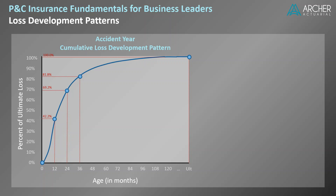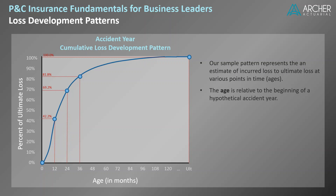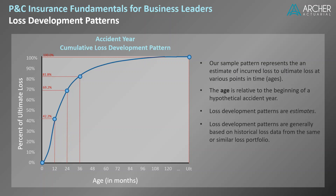Let's step back for a second and talk about the pattern we just graphed. In our example, the pictured loss development pattern represents an estimate of incurred loss relative to ultimate loss at various points in time. The points in time, also called ages, are relative to the beginning of a hypothetical accident year. So this pattern can be used in many ways, including calculating loss reserve needs. However, it's important to remember that this pattern is just an estimate, generally one that's based on historical loss data from the same or similar loss portfolio. Next, let's look at how this example pattern can be put to good use.